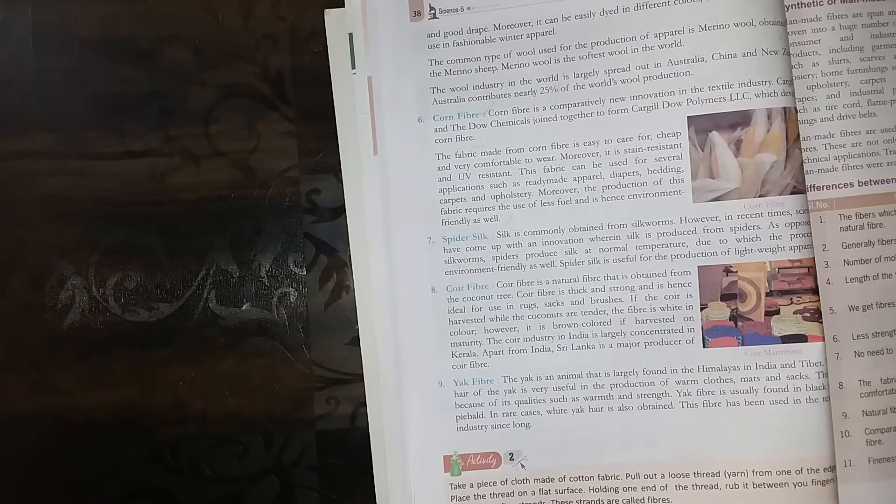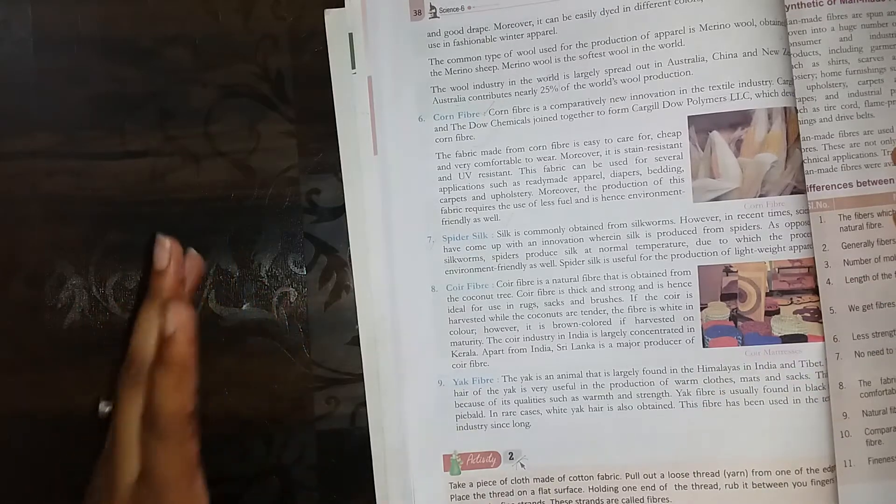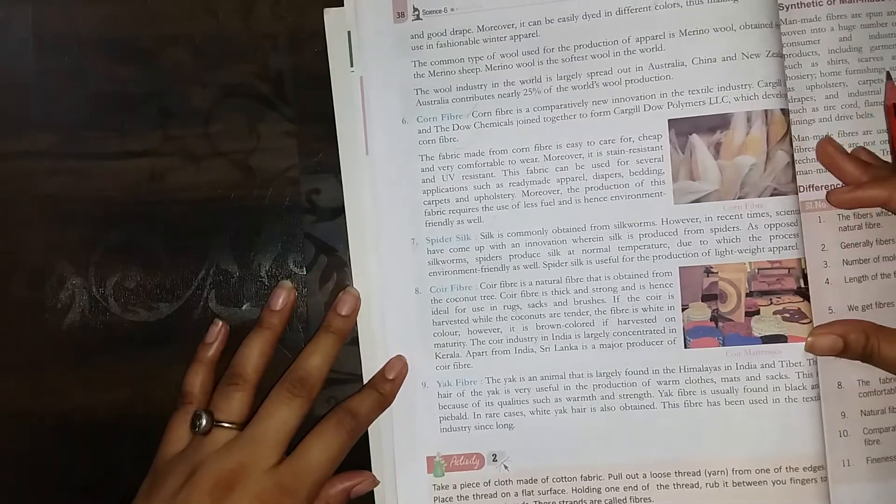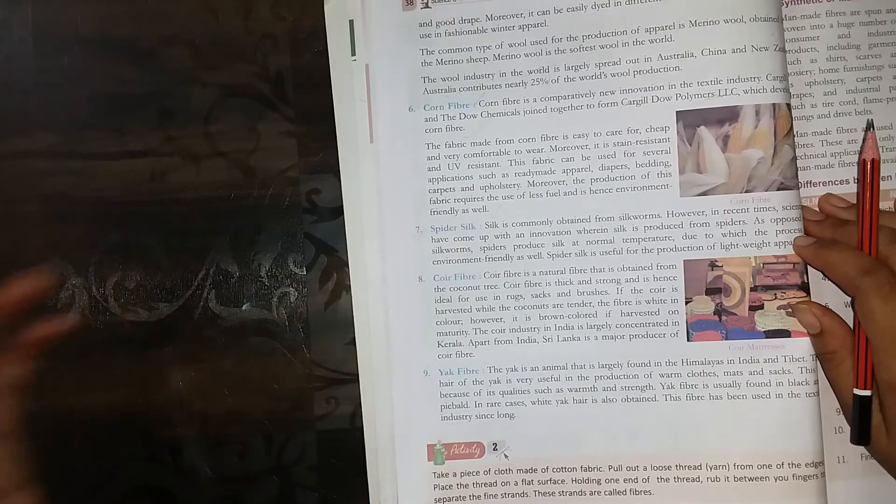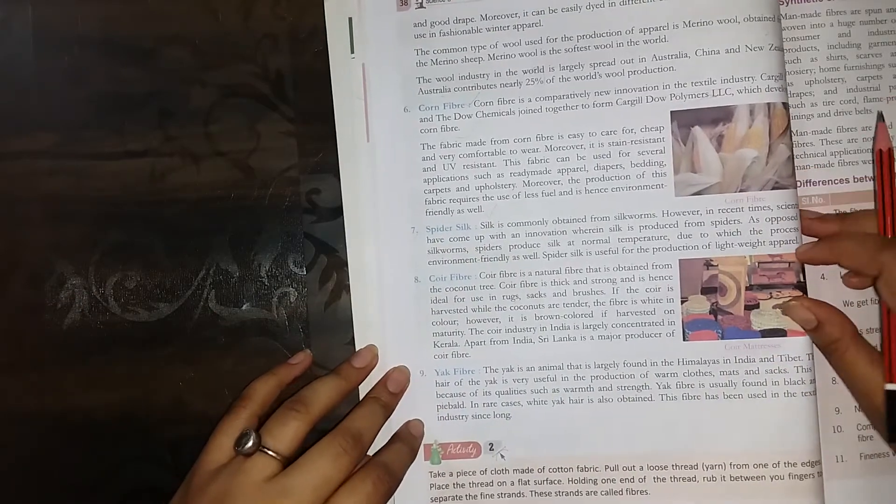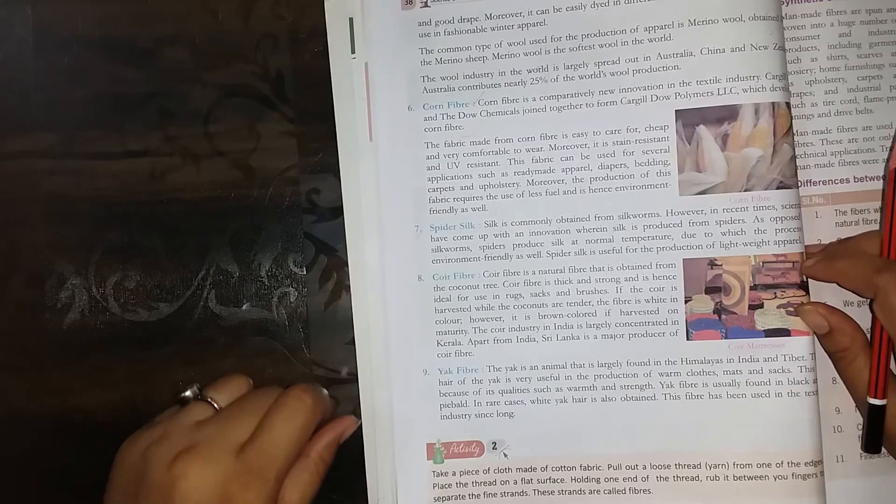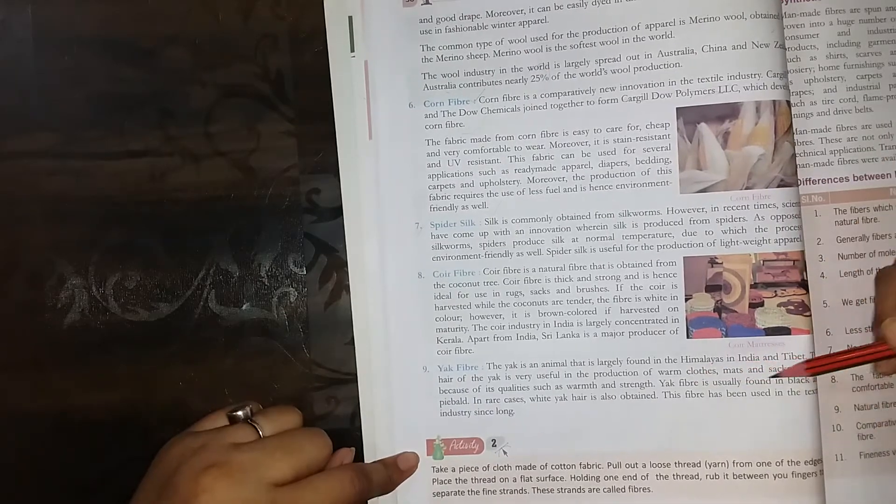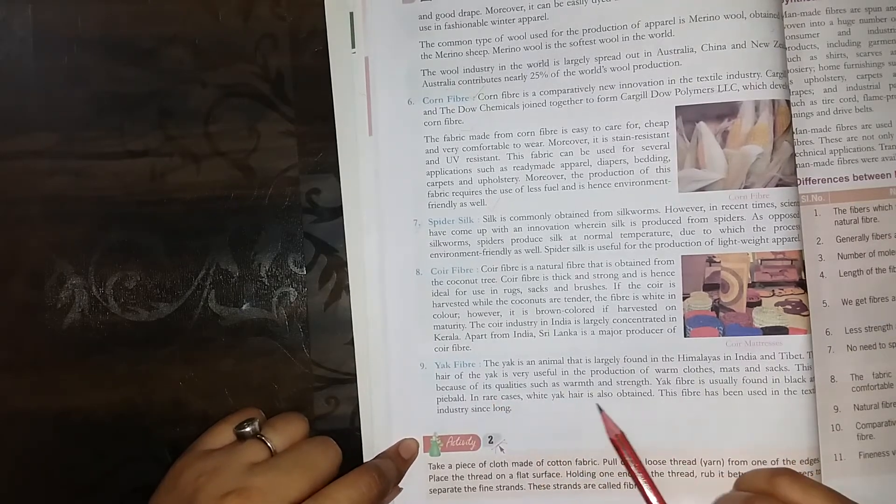The yak is a mammal that is largely found in the Himalaya and Tibet. Yak is an animal. The hair of the yak is very useful in the production of warm clothes because of its qualities such as warmth and strength. It is very warm and very strong. Yak fiber is usually found in black and piebald. In rare cases, white yak hair is also obtained.